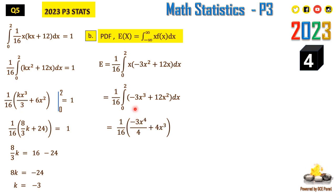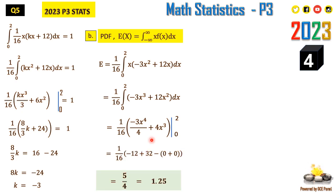Integrating: −3x³ integrates to −3x⁴/4, and 12x² integrates to 4x³, with limits from 0 to 2. Taking the upper limit minus the lower limit gives the result 5/4. So the mean of X is 5/4.